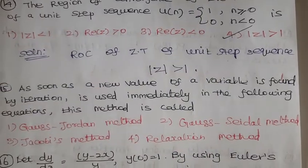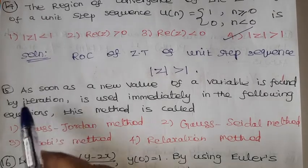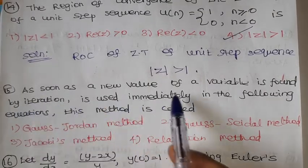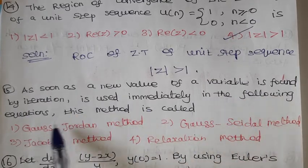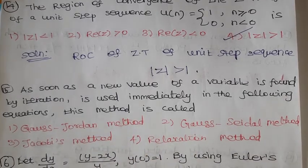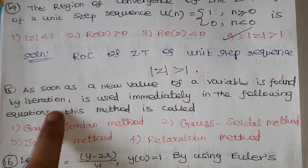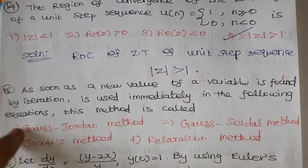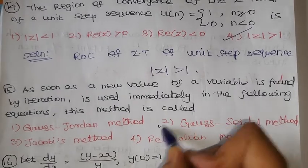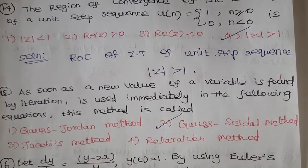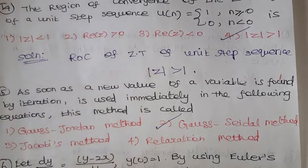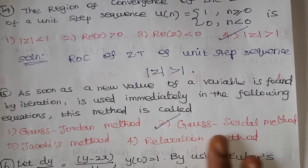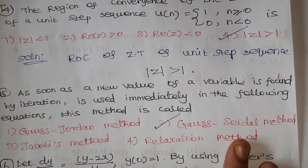Problem number 15: As soon as a new value of a variable is found by iteration, it is used immediately in the following equations. This method is the Gauss-Seidel method. Option 2, Gauss-Seidel method, is the correct answer, because in Gauss-Seidel, as soon as a new variable is found by iteration, it is used immediately in the following equations.